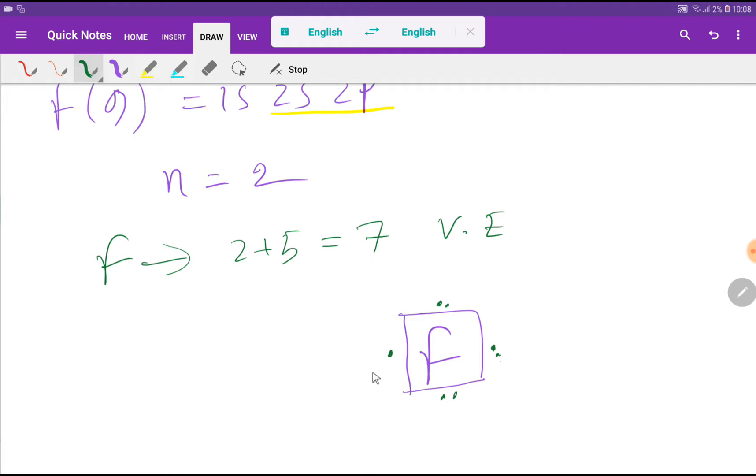This means that fluorine can make one single bond. After making one single bond, fluorine can achieve its octet.